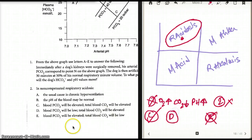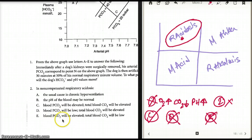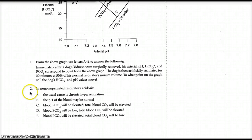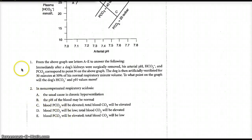So we're left with choice D: blood PCO2 will be low? Absolutely not. Both blood PCO2 — the partial pressure of carbon dioxide, which is the CO2 dissolved in the plasma — and total carbon dioxide will be elevated. There are three ways carbon dioxide travels in our blood: as bicarb, dissolved in plasma, and bound to the N-terminus of hemoglobin. If the partial pressure of carbon dioxide increases, the total carbon dioxide is going to increase. They go hand in hand. So the answer is choice C.